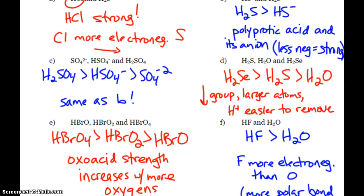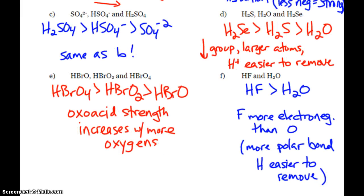So for B and C, we have the same situation. We have polyprotic acids and their anions. So the less negative the charge, the stronger the acid is. For letter D, H2SE is stronger than H2S, stronger than H2O. Because as you, SE, S, and O are in the same group. As you go down, the atoms get larger. The H is easier to remove from the SE, which is largest. And so, that makes it the strongest acid.